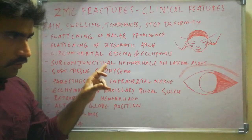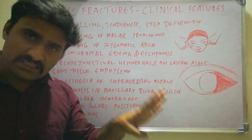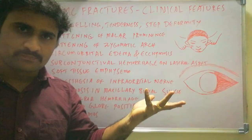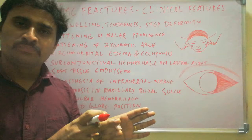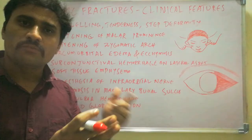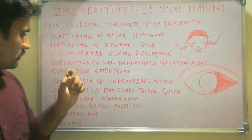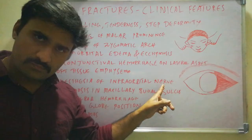Soft tissue emphysema occurs due to ZMC fractures causing a break in the anterolateral wall of the maxillary sinus or a break in the orbital floor. Air from the maxillary sinus escapes into the surrounding soft tissues, resulting in soft tissue emphysema. This can be identified by a crackling sensation when you palpate the soft tissues.